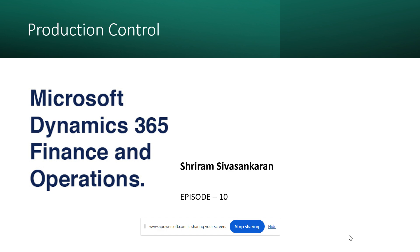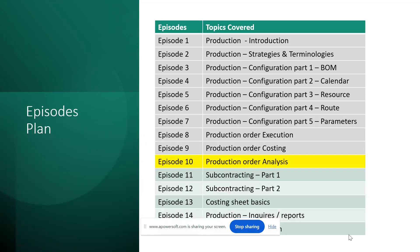If you are following the episodes posted in the last few days, I know most of them are more than 15 to 20 minutes, but I will try to keep this particular episode to less than five to seven minutes. In this episode, we have already talked a lot about production costing in our previous episode, but here we will quickly understand about production order analysis.